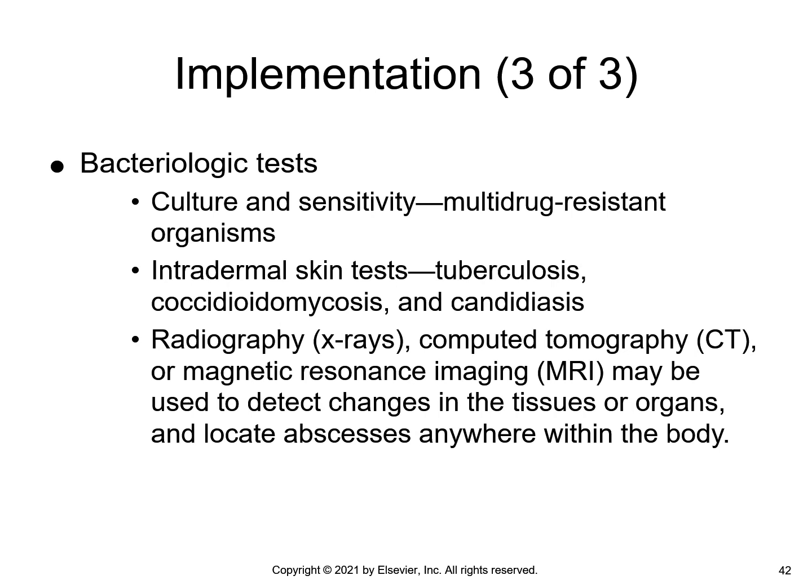We can perform tests to determine what kind of agent we are dealing with. A culture and sensitivity test helps identify the organism. Blood tests can look for antigens and antibodies. X-rays, CT scans, or MRIs help find changes within the body and can locate an abscess that could be a potential site of infection.